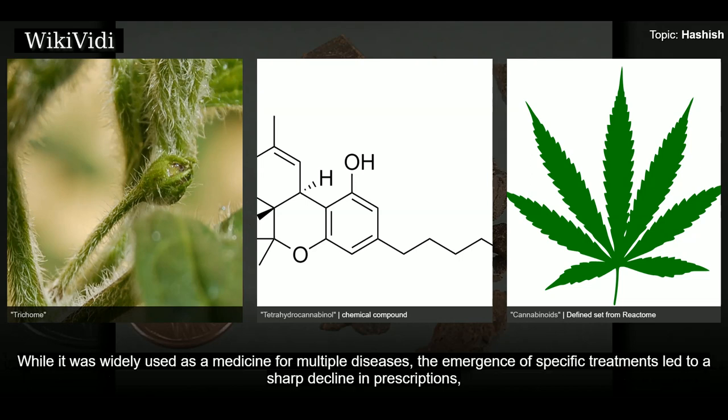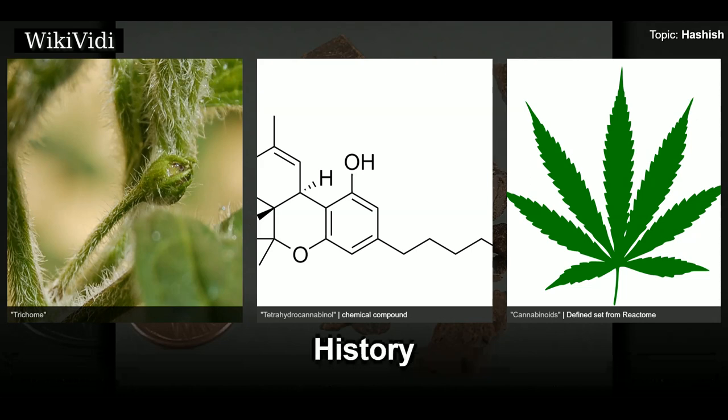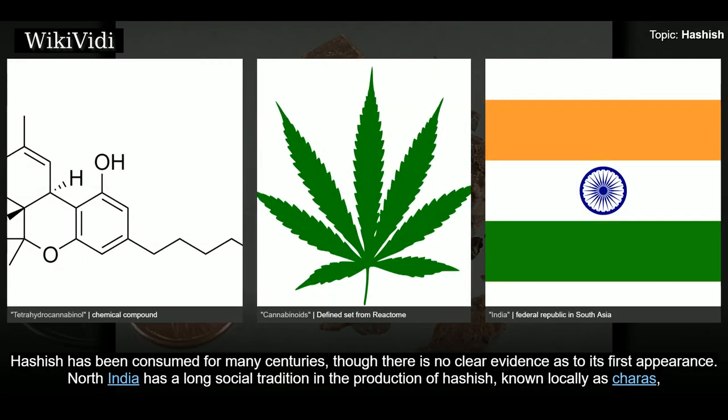Hashish eventually became illegal to use via the 1971 UN Convention on Psychotropic Substances. The street price for hashish in Europe in 2011 varied from 3 euros per gram to 18 euros in Malta, or as high as 200 Norwegian kroner in Norway. Hashish has been consumed for many centuries, though there is no clear evidence as to its first appearance.